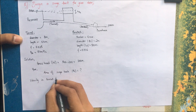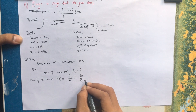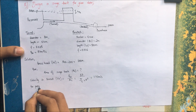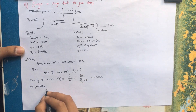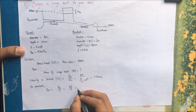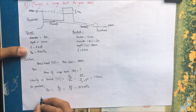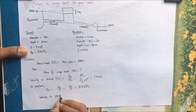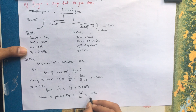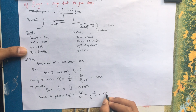Velocity in tunnel: Vt = Qd / At = 87 / (π/4 × 8²) = 1.73 m/s. For the penstock, there are four penstock pipes, so discharge per penstock = 87/4 = 21.9 m³/s. Velocity in each penstock: Vp = 21.9 / (π/4 × 2²) = 6.923 m/s.